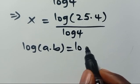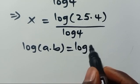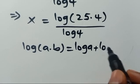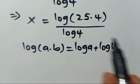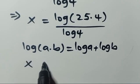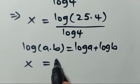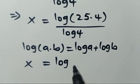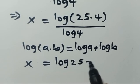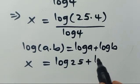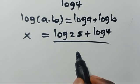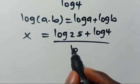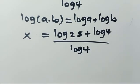Applying the law of logarithms, we have x equals log 25 plus log 4, all divided by log 4.